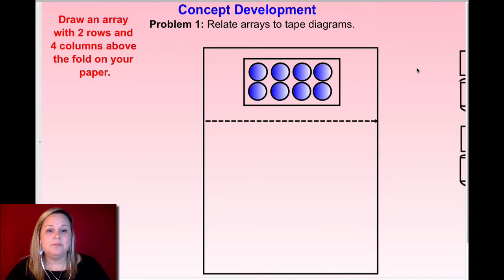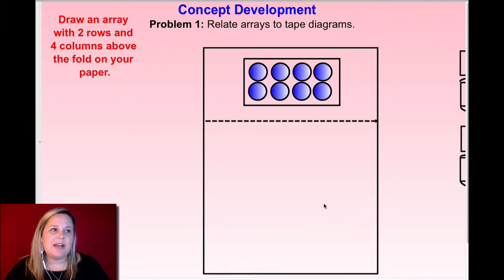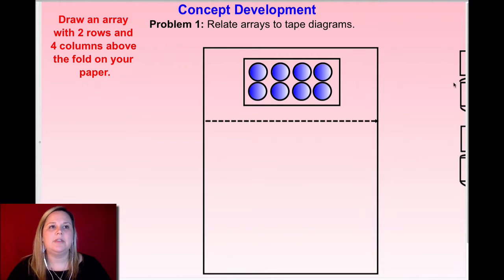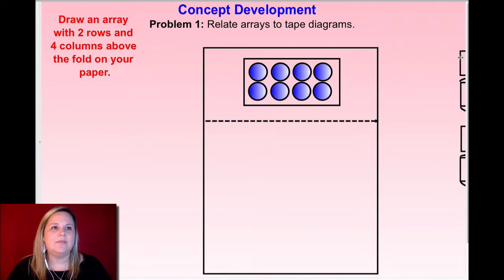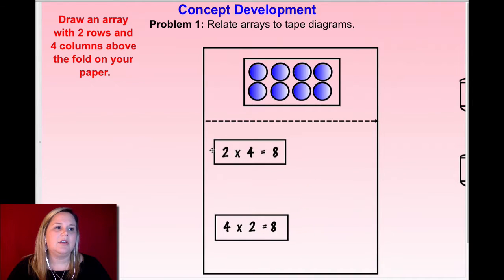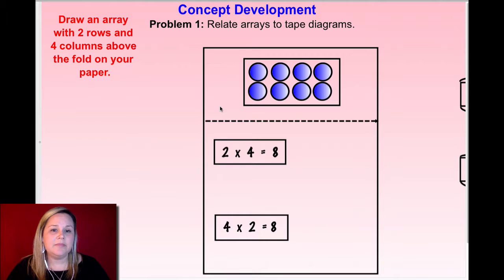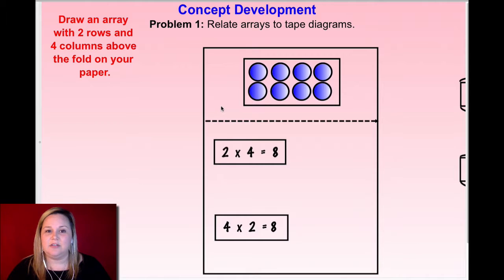Go ahead, pause the video, write both expressions in the bottom half of your paper — write one towards the top and one a little bit towards the bottom because we're going to do some stuff with each one. Here are the two I came up with: two times four and four times two. Both of them the product is eight, no matter which way you flip those factors.